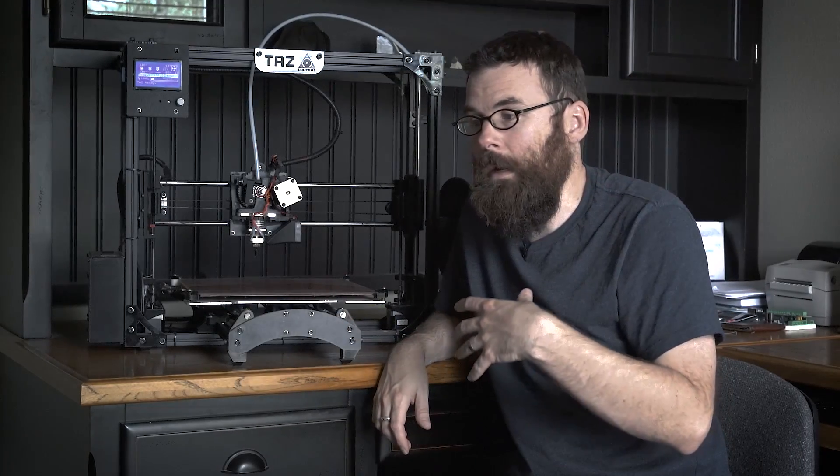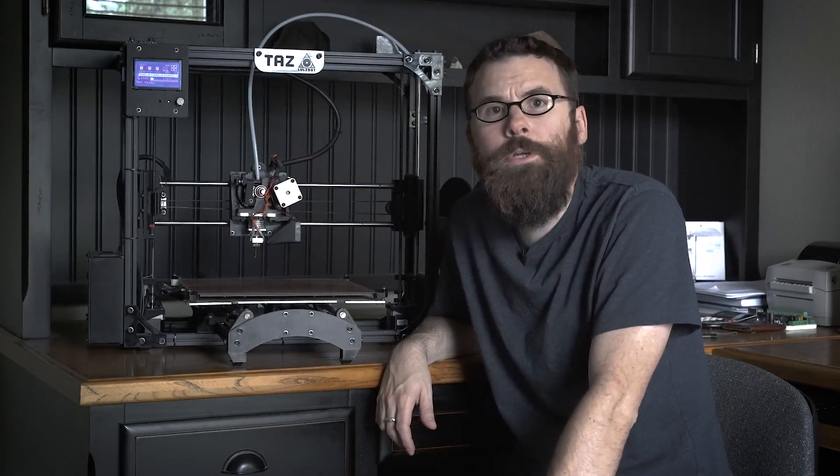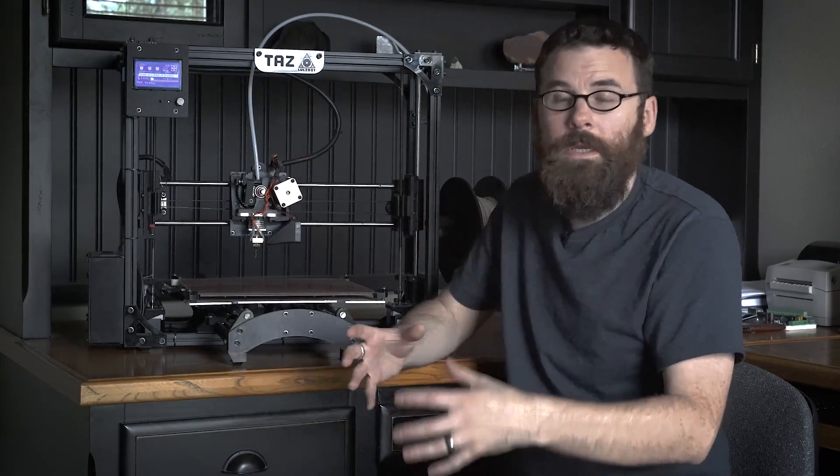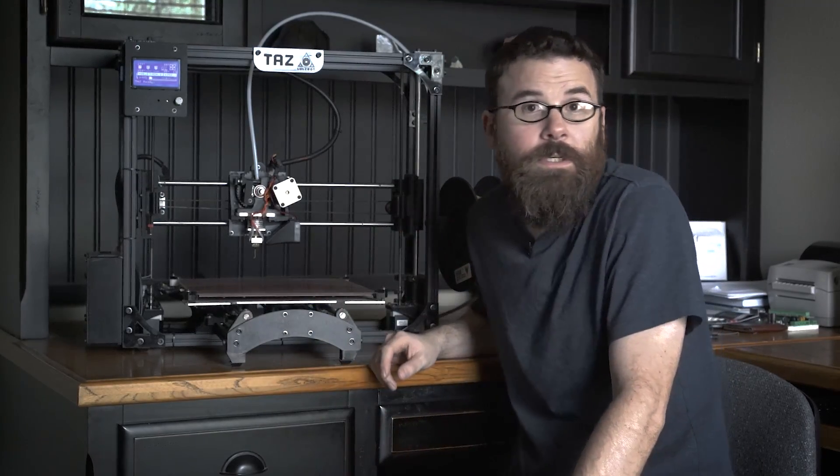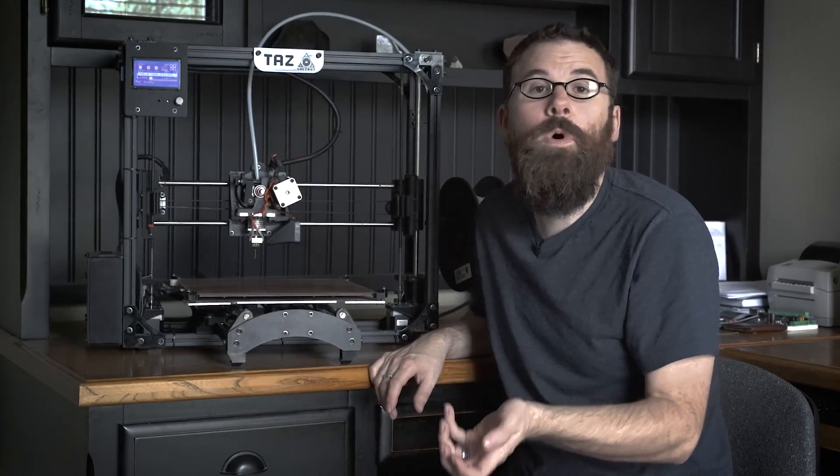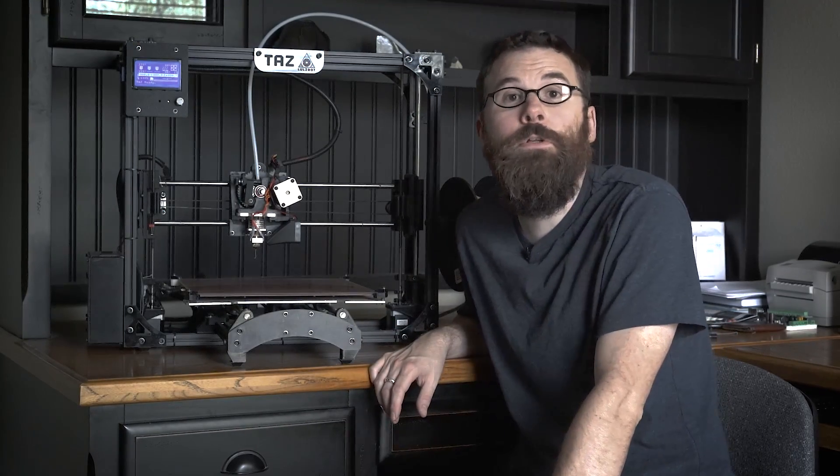A 3D printer is an example of an additive CNC machine, meaning it starts with nothing here and then builds up. Something like a CNC machine, the Tormach out in the garage, is actually subtractive, meaning it's going to take a solid block of something and then subtract away from it. So these machines are very similar, and they both have the same kind of movement, it's just that one is adding material and one is subtracting material away.